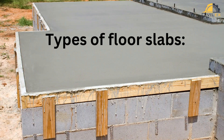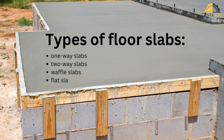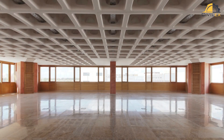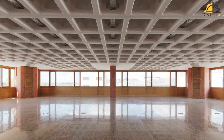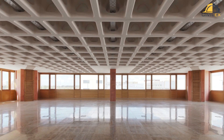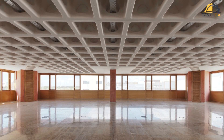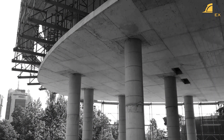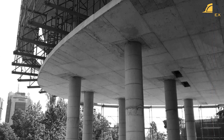There are several types of floor slabs, including one-way slabs, two-way slabs, waffle slabs, and flat slabs. One-way slabs are designed to span in one direction and are supported on two opposite edges. Two-way slabs span in two directions and are supported on all four edges. Waffle slabs have a grid-like pattern of beams and columns that create a series of shallow troughs, reducing the amount of concrete used. Flat slabs have no beams or drop panels, making them easier to construct and providing greater flexibility in the layout.